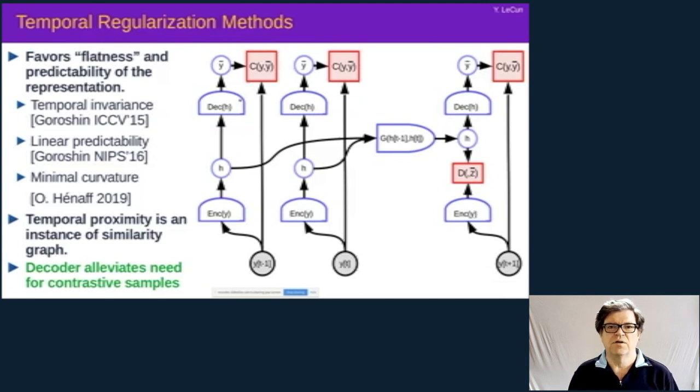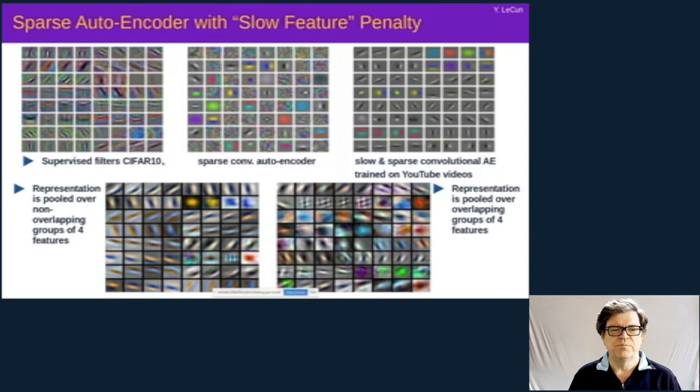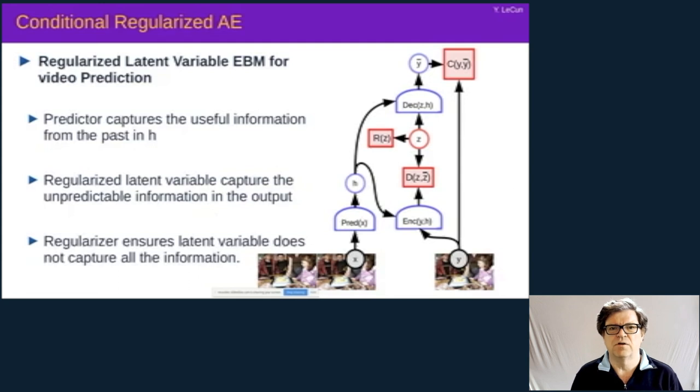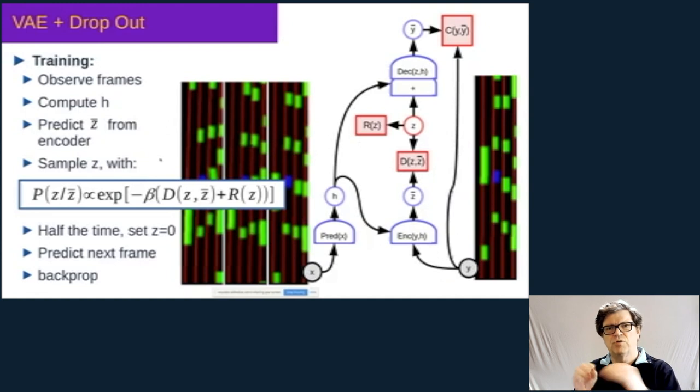Now, there are other types of regularization that lead to kind of good representations. In particular, things that exploit a graph of similarity or perhaps a temporal continuity. So things like learning temporally invariant representations or making them linearly predictable. This is work by my student Rasko-Roshin a few years ago. Or by minimizing the curvature of the trajectory followed in the representation space. And having sort of decoders to reconstruct from the input alleviates the need to have contrasted samples. Again, this works really well. It learns really beautiful features. It's not clear that those features are useful in sort of a deep convolutional net context yet. But that's, again, a challenge for the next few years.